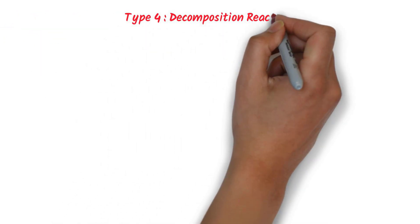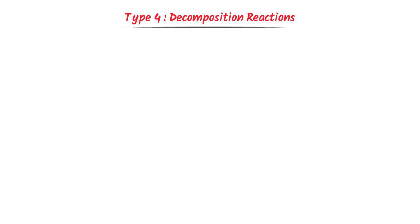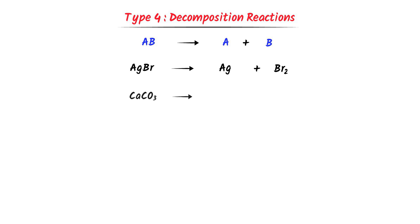The fourth type is decomposition reactions. In such reactions, we heat compound A and it breaks down into B and C. For example, consider silver bromide — when we heat it, it decomposes into silver and bromine. Secondly, consider calcium carbonate — when we heat it, it decomposes into calcium oxide plus carbon dioxide gas. Remember that carbonates always decompose into carbon dioxide gas.